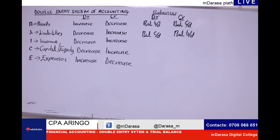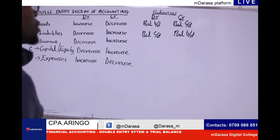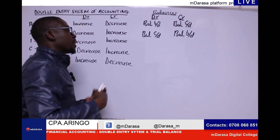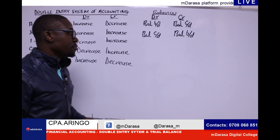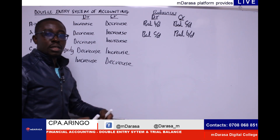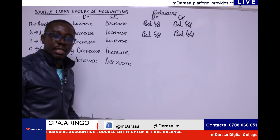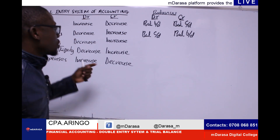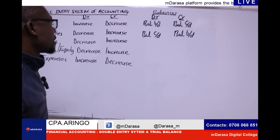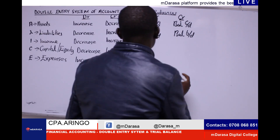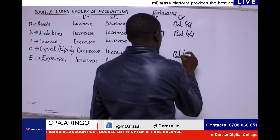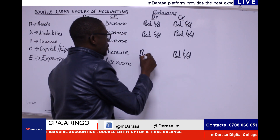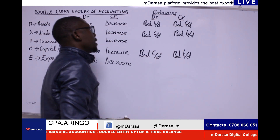Capital, of course, will entail items such as ordinary shares, share premium, general reserves, and retained earnings — all these are components of equity. In the event that we are considering their balances brought down, those balances brought down will always be recorded on the credit side, whereas balance carried down will always be recorded on the debit side.